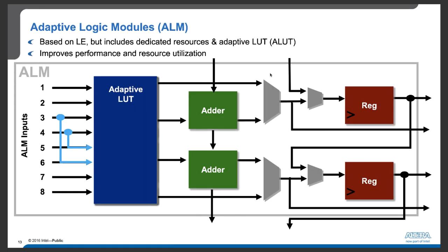The adaptive logic module is Intel FPGA's specific design that includes not only logic elements, but also dedicated resources and an adaptive lookup table, or ALUT. In the adaptive logic module, there is an adaptive lookup table that can flexibly organize inputs and generate a specific number of outputs. It also includes adders to perform arithmetic operations, with results stored in registers. With adaptive logic modules, Intel FPGAs can improve performance and resource utilization.